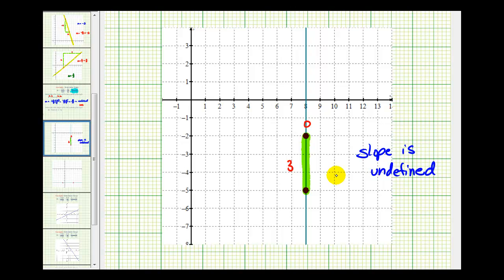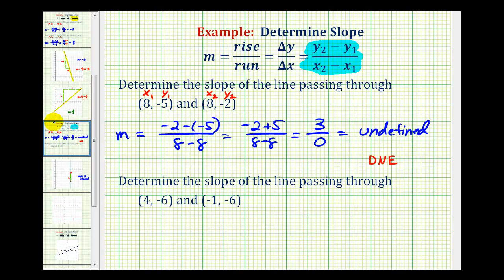Let's take a look at a second example. We're given two points, so we'll call these the ones, x₁, y₁, and these are the twos, x₂, y₂. Then we'll go back to the formula.